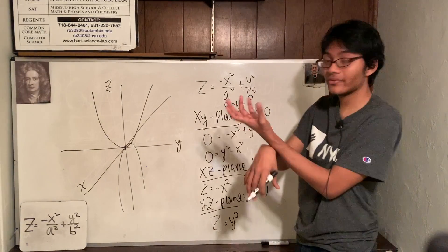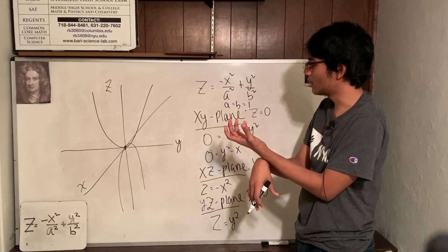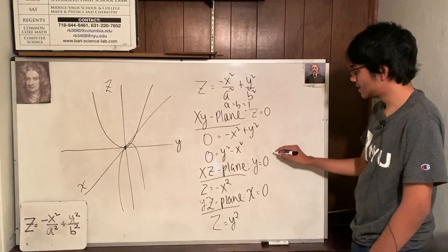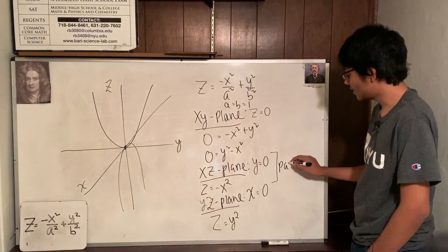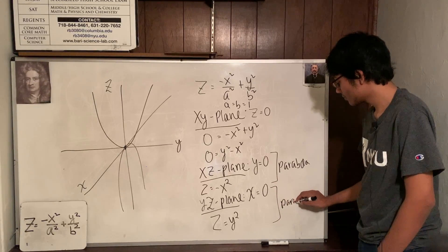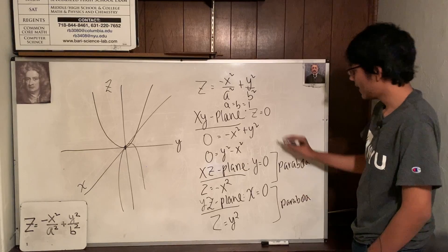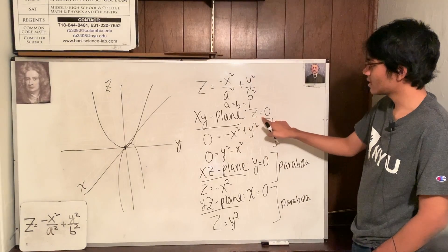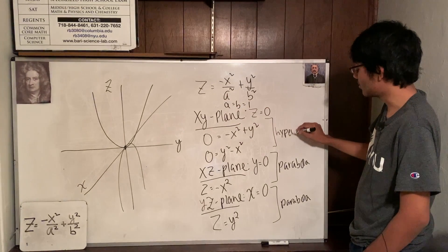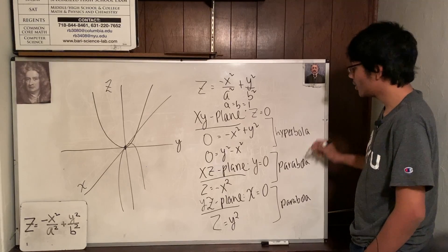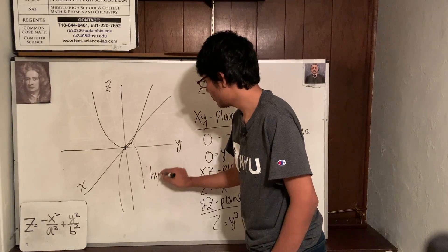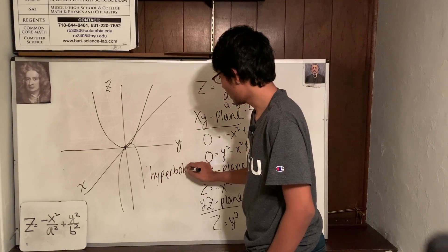So what are we left with? We're left with this kind of double napped parabola. Well, if you think about it, what does that tell you? This tells you the cross section on the xz plane is a parabola. The cross section on the yz plane is a parabola. And the cross section here when we fix zero, well, that looks like a hyperbola to me. It would be a hyperbola. And so we call this a hyperbolic paraboloid.